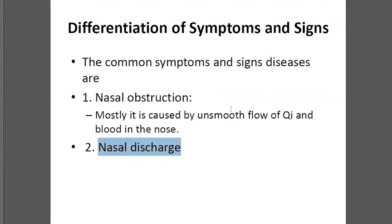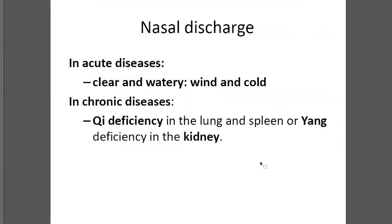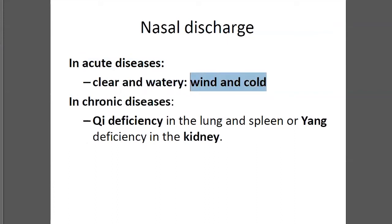Nose blocking is easier — people can tell you. But the discharging may be caused by different reasons and may have different kinds of discharge. For acute illness, it is mostly clear, watery discharging — that is mainly caused by wind-cold. That is the main acute reason causing nose discharging.